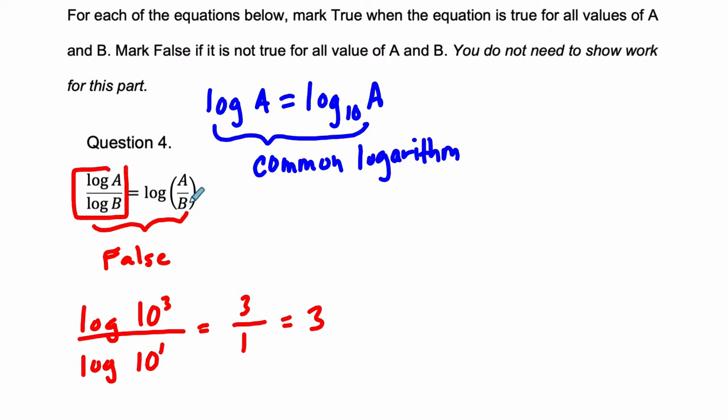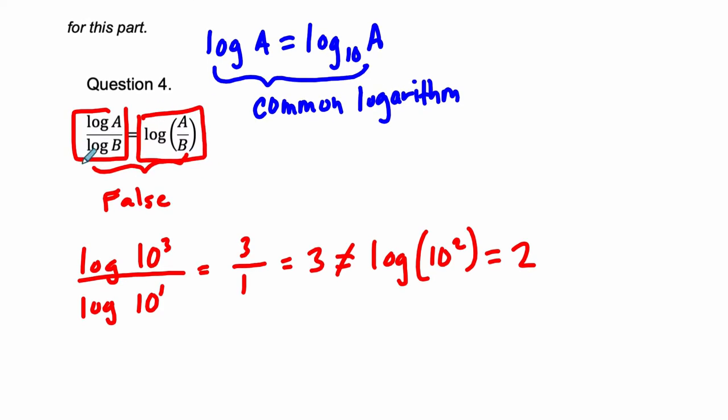But what if we did the log of A divided by B? We'll see it's not going to be the same. So that's going to be the log of 10 squared, because 10 to the third divided by 10 to the first is actually just 10 squared. And that just equals 2. So this side of the equation equals 2, and this side of the equation equals 3. Those are different numbers.